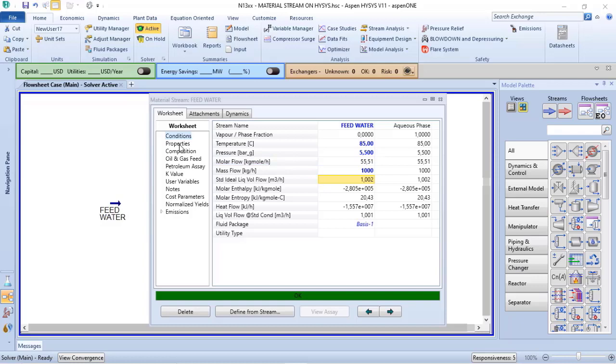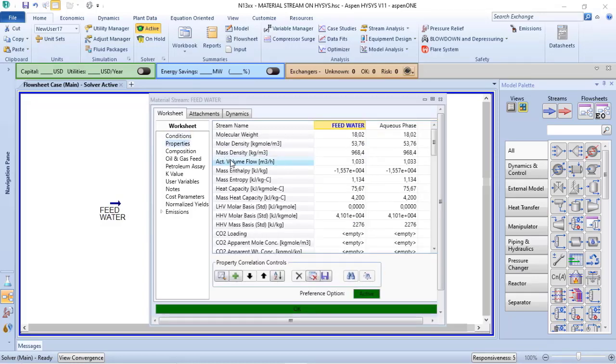If you go to properties, you'll see the actual volume flow. In this case, the actual liquid volume flow is calculated as 1.033.